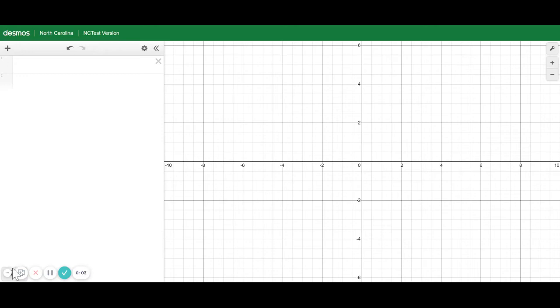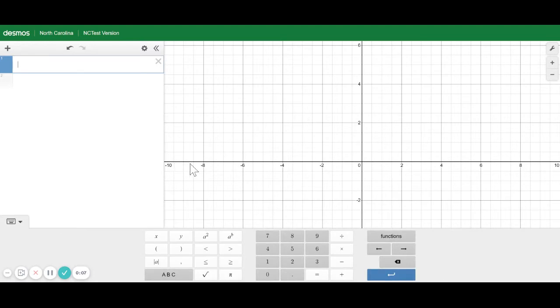You can use the Desmos graphing calculator to make these problems a little easier by pulling up the keyboard and typing in the square root of A squared plus B squared.